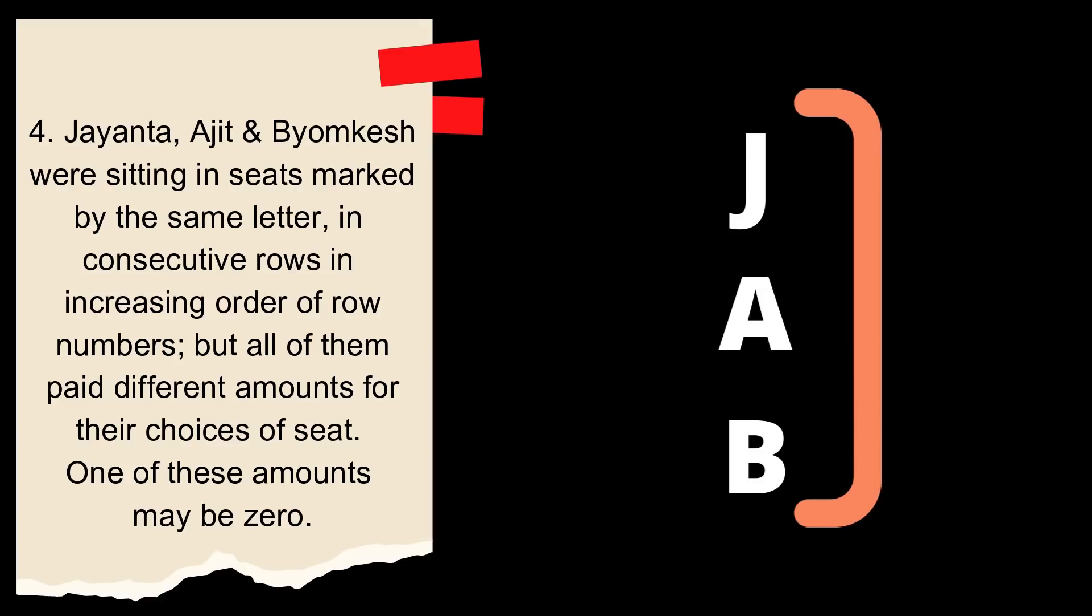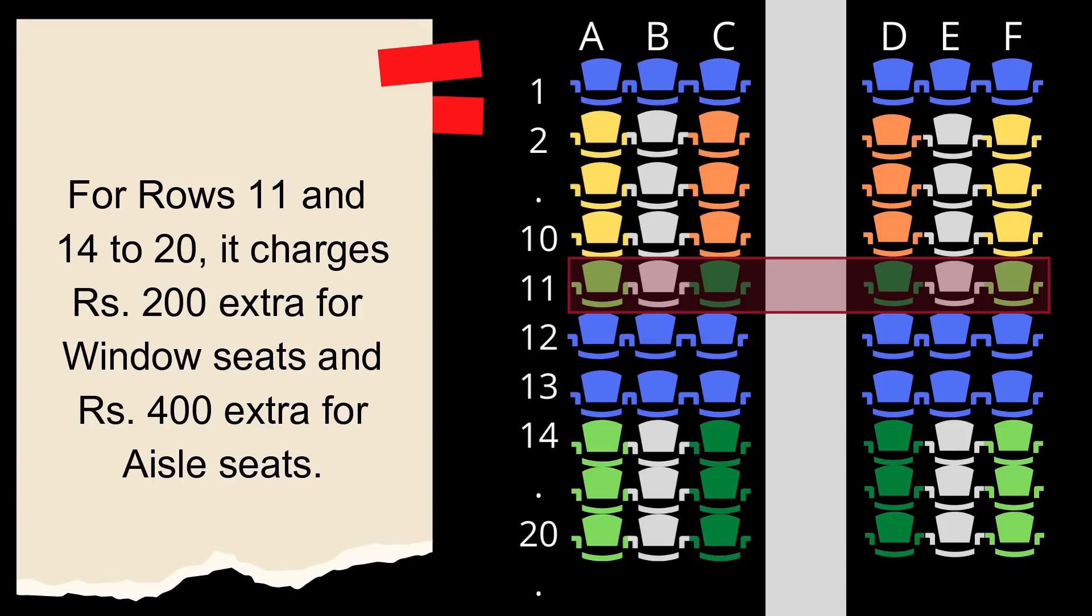The picture that's there in my head, I have already drawn it. It's JAB sitting like this paying different amounts. Now, I know why he mentioned row number 11. But let's come back to this later.